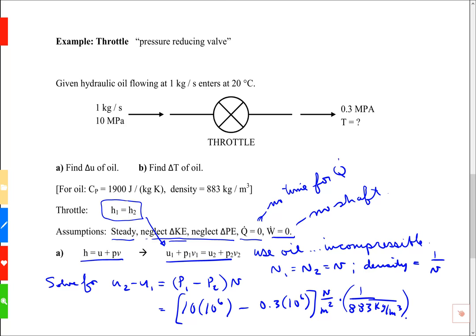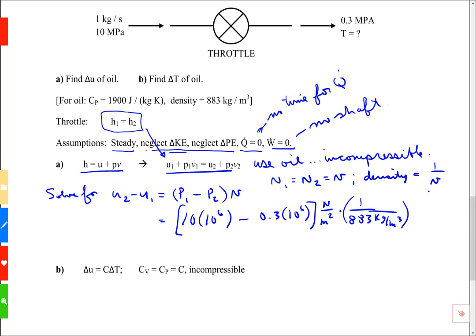And when I compute that, I've got plenty of space here. That's 10985. And the units are newton meter per kilogram. It's the same as a joule per kilogram. Okay. So that's responsive to part A. That's the change in internal energy in joules per kilogram.